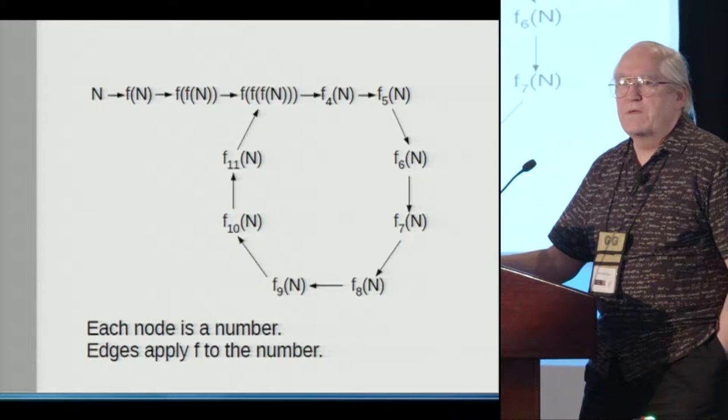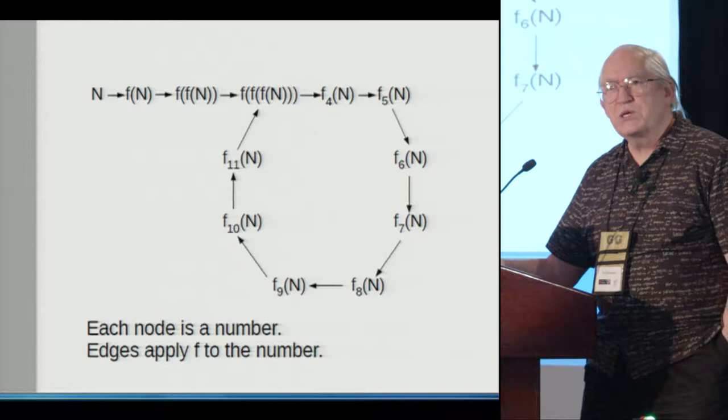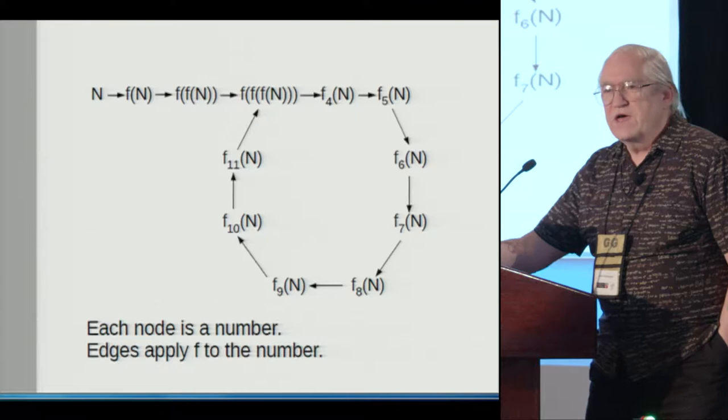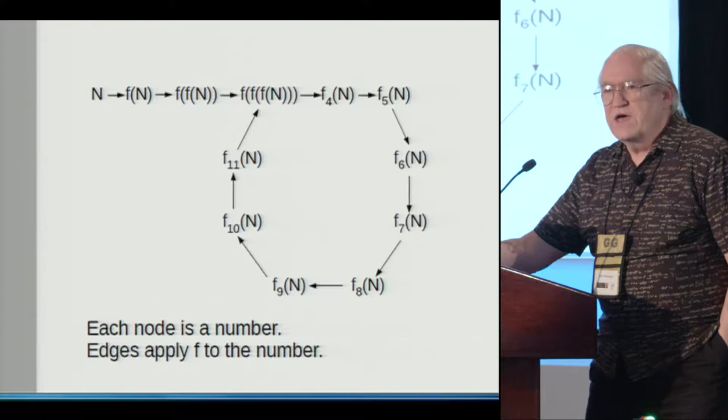And since it's going to loop, unless it starts out in a loop, there are going to be two places that come together into one place. In this picture, I've got f2 and f11 both coming into f3. That's what I want for what I'm doing.